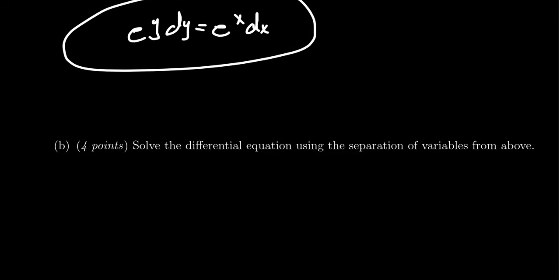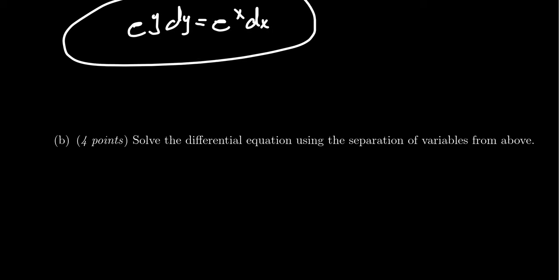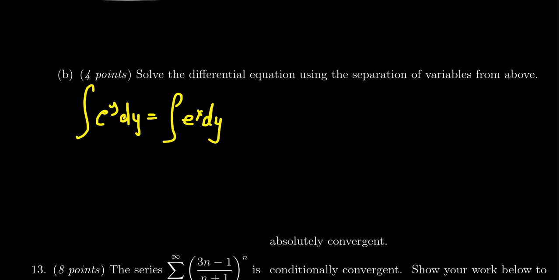The next four points then comes from solving the differential equation using the separation of variables. So we want to integrate e to the y dy is equal to the integral of e to the x dx. So integrate both sides of the equation. This gives us, we're going to integrate the left-hand side with respect to y. So we get e to the y.